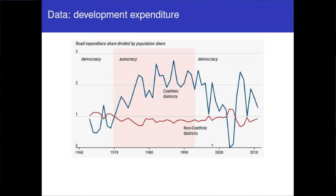Looking at the development expenditure data: on the x-axis is the time period, divided into democracy, autocracy, and democracy again. You see co-ethnic groups getting substantially more road expenditure during the autocratic period. The measure is a normalized share of road development expenditure proportional to population — a value of one means equal distribution, a value of two means a population is getting twice its national share. In the autocratic period there's substantial patronage in co-ethnic districts, while in the democratic era you see much more equalization.